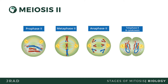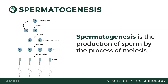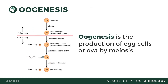Spermatogenesis is the production of sperm by the process of meiosis. Spermatogenesis begins at the age of puberty and continues until old age. Oogenesis is the production of egg cells, or ova, by meiosis, and it begins during fetal development. Puberty in females triggers the primary oocytes to continue their development.